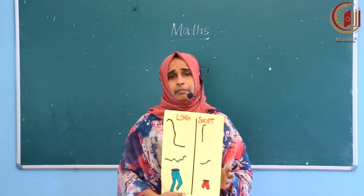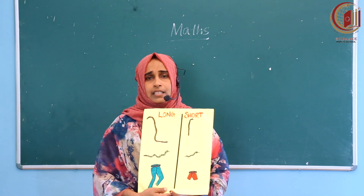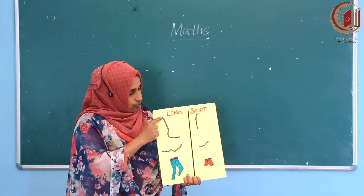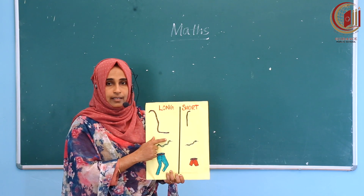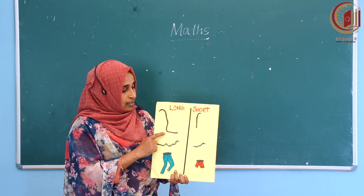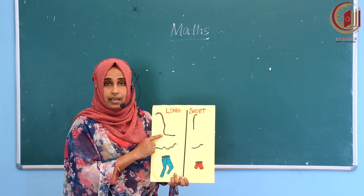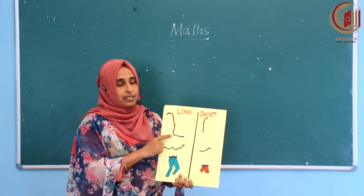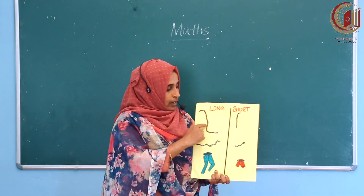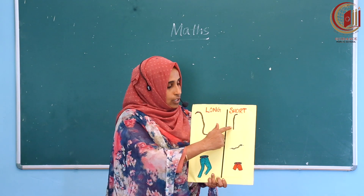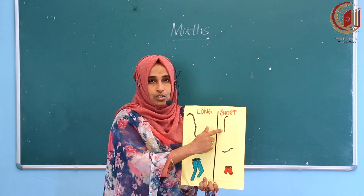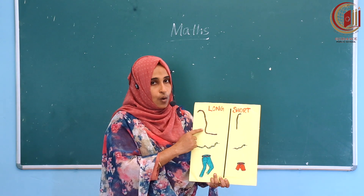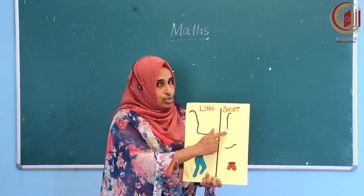I will show you some examples of long and short. What is this? This is a rope. This rope is long. This rope is short. This rope is long and this rope is short.